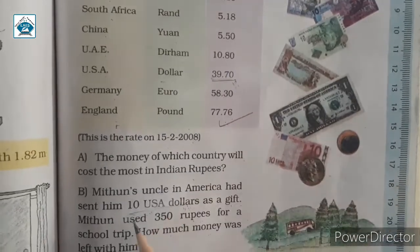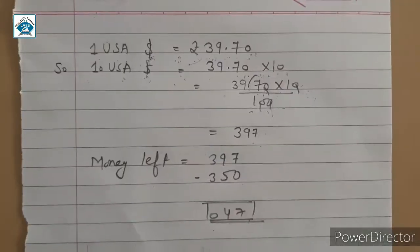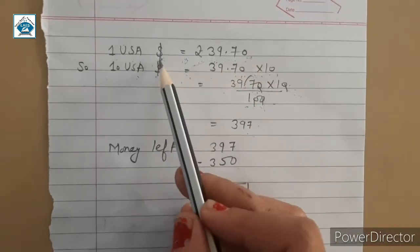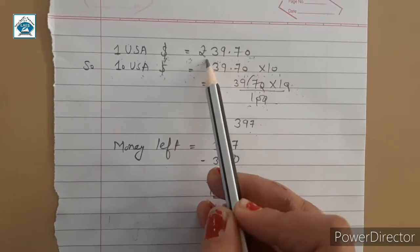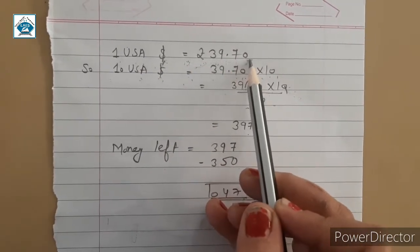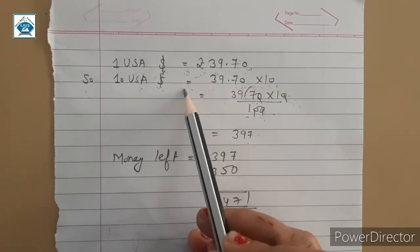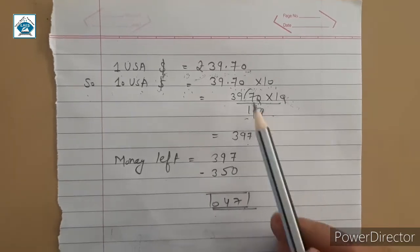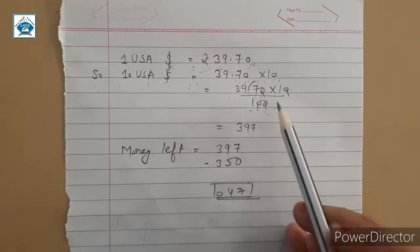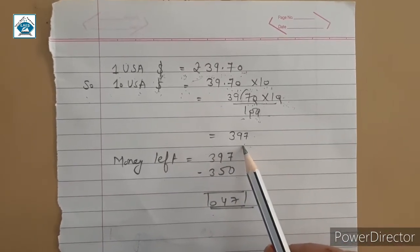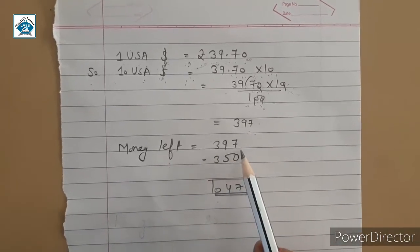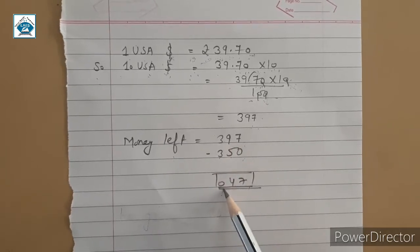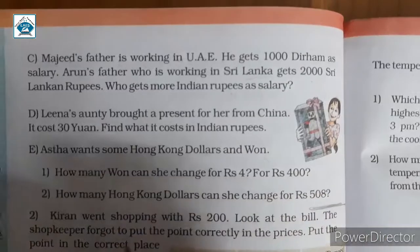Let's solve. 1 USA dollar equals 39.70 rupees. So 10 USA dollars equals 39.70 multiplied by 10 — point removed, divided by 100, zeros cancel — equals 397 rupees. Now money left: 397 minus 350. 7 minus 0 is 7, 9 minus 5 is 4, 3 minus 3 is 0. So 47 rupees are left.